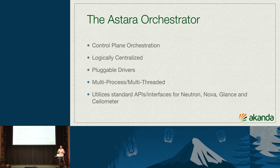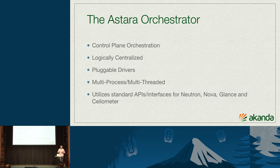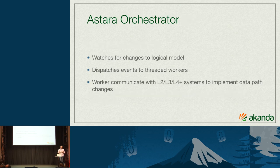The pluggable driver model is nice, but how do you keep those processes alive and well? We wanted the control plane to be highly available, so we designed it to be multi-process and multi-threaded. From a deployment perspective, you can configure the process to be as large as you need, or create as many processes as needed to manage network service orchestration. At the same time, we wanted to maintain the same API footprint from the tenant perspective in OpenStack, so we use the standard APIs for Nova, Neutron, Glance, and Ceilometer. When the orchestrator is running, it watches changes to the logical model and renders those down via the drivers onto the particular service.